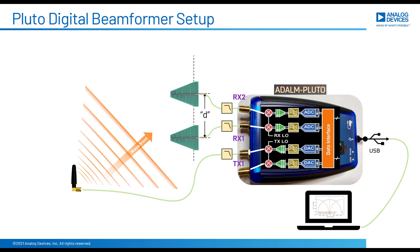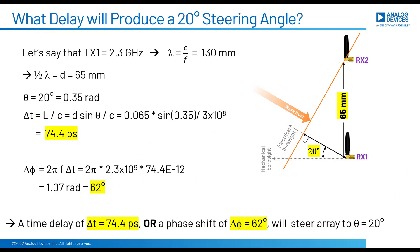Time delays can often handle wider bandwidth signals a little bit better. So if you'll recall, this is the setup that we've been using. We have two receive antennas and one transmit antenna. And by controlling the delay of the receive antennas, we can focus their beam in a certain direction. In the previous videos, we've calculated that delay and then used a phase shifter to implement it. And how do we know what phase shift delay corresponds to what angle? Well, we did some simple calculations like this.